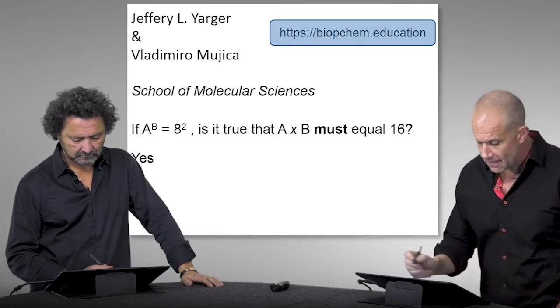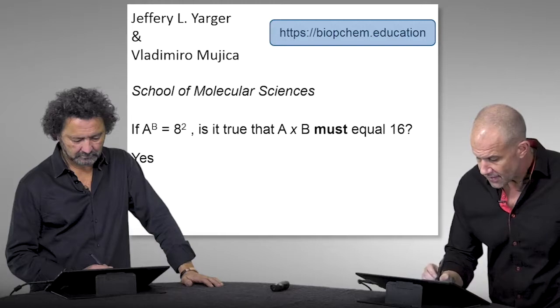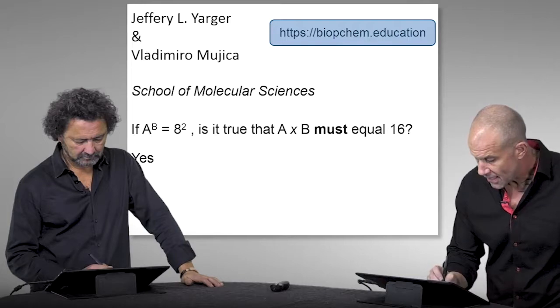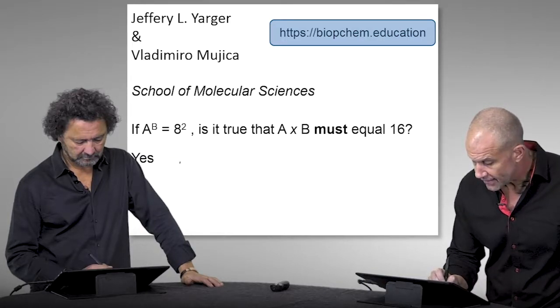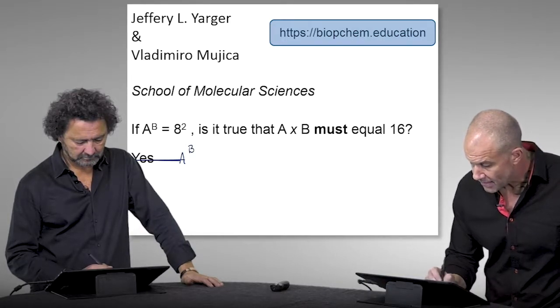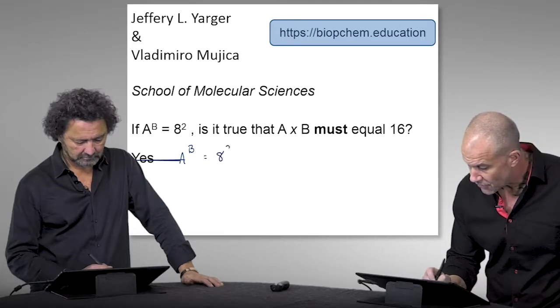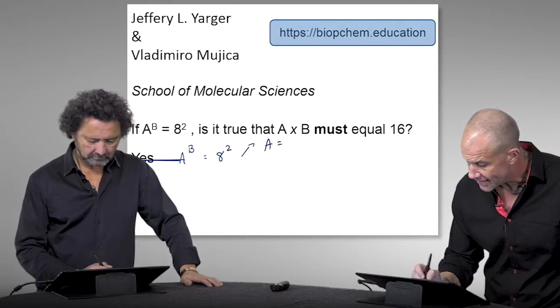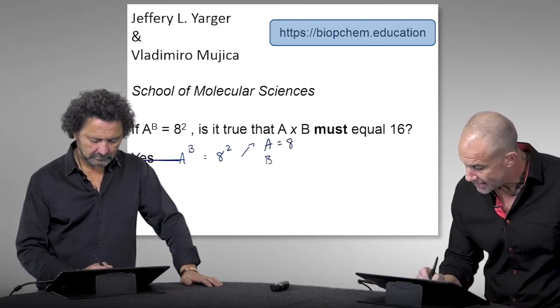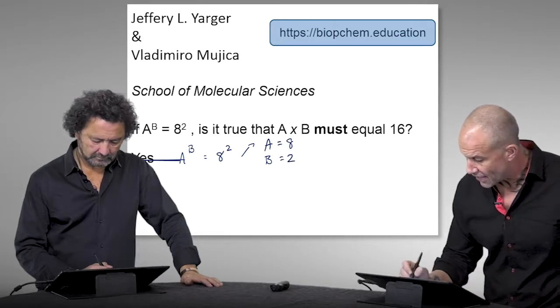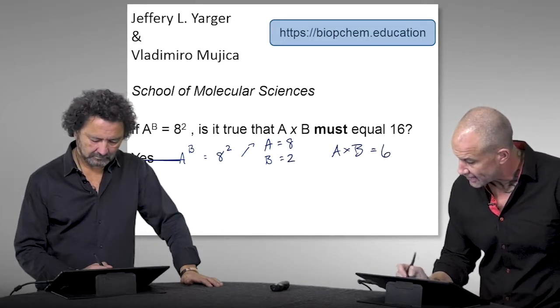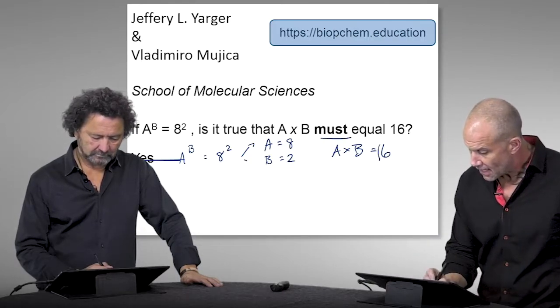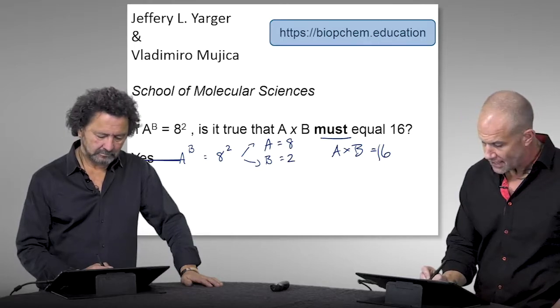And let me start by saying, what is the typical justification for somebody who says yes? The implication here is that they wrote A to the B is equal to 8 over 2, so they're giving the exact structure of that. So what they're implying is that A is equal to 8 and B is equal to 2, and therefore, A times B is equal to 16.